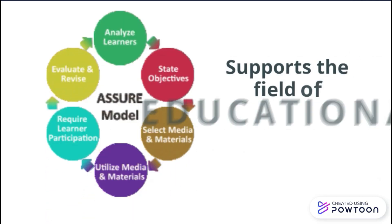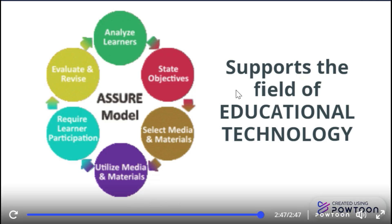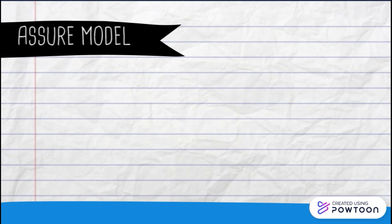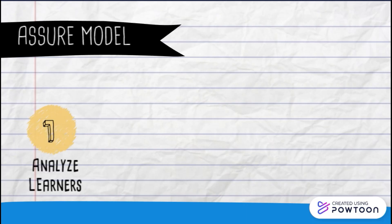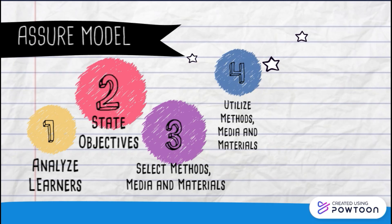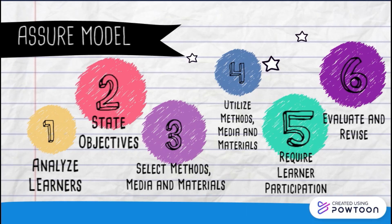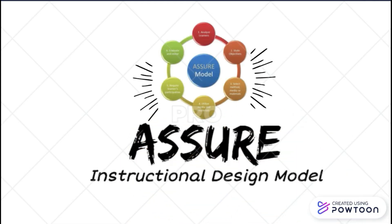The ASSURE Model supports the field of educational technology. It is based on the principle that no one student acquires information in the same way. While the ASSURE Model is used to systematically design instruction, it steps away from the traditional means of instruction toward the use of technology to deliver the instruction. In conclusion, the ASSURE Model has six components, each necessary for the successful implementation of instruction: Analyze Learners, State Objectives, Select Methods, Media, and Materials, Utilize Media and Materials, Require Learner Participation, and Evaluate and Revise. That is the basic overview of the ASSURE Instructional Design Model.